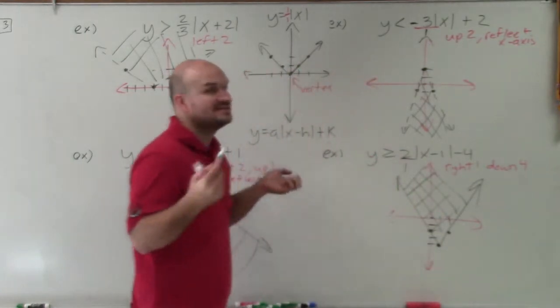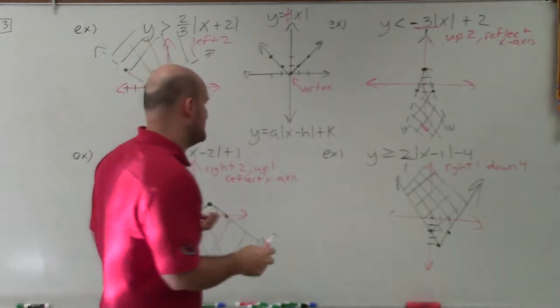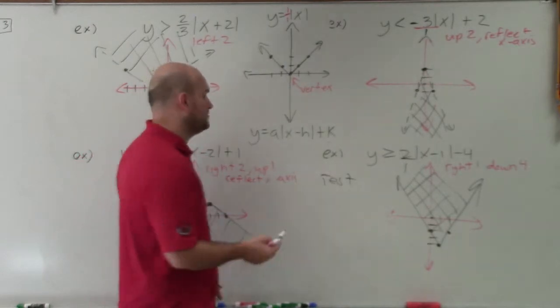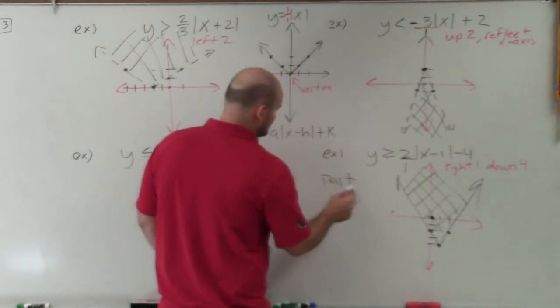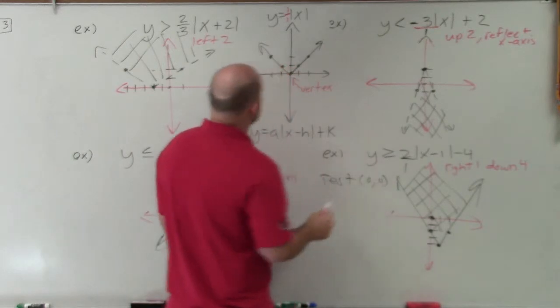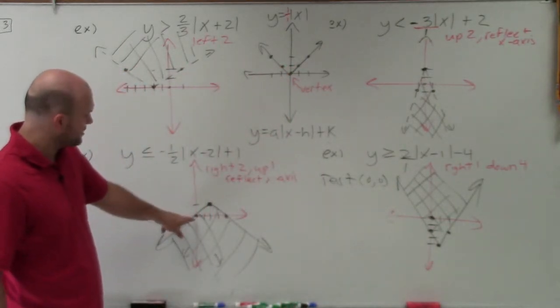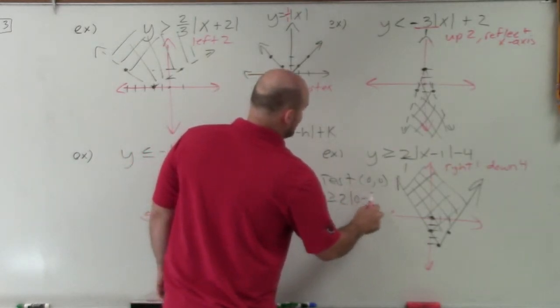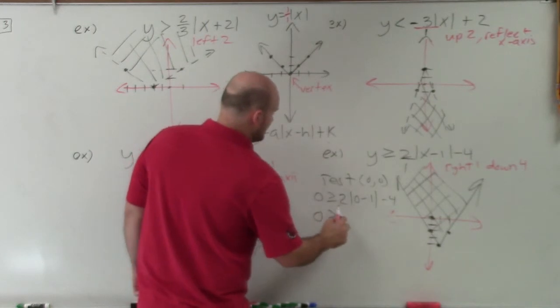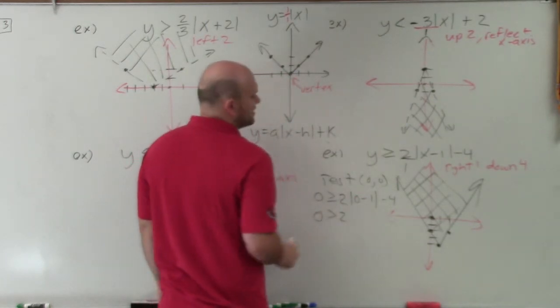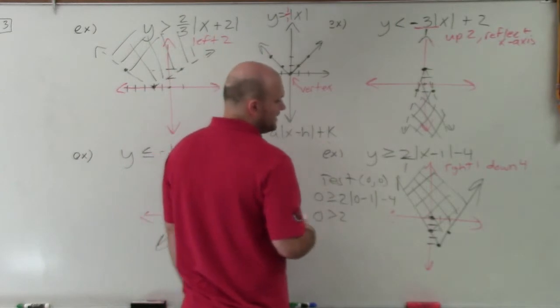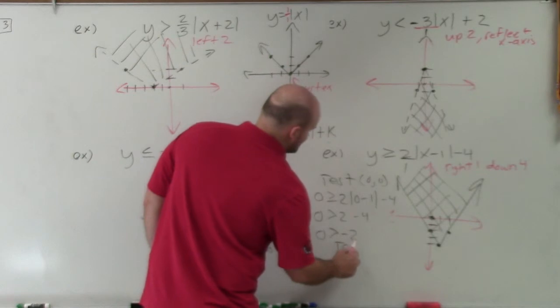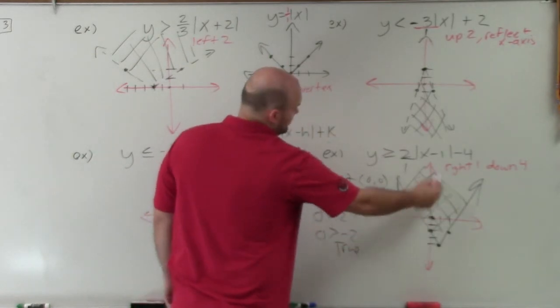If you'd like to use a test point, please feel free to use one for these problems. I'm just trying to make the video go by a little bit sooner. You want to pick a point that's not on the line. 0, 0 is usually the best case. You just pick 0, 0, and then plug that in for y and plug that in for x. So you have 0 is greater than 0 minus negative 1 is negative 1. Absolute value of negative 1 is 1. So that'd be 2 minus 4. 0 is greater than negative 2. That's true. 0, 0 is true. All the points above it are true.